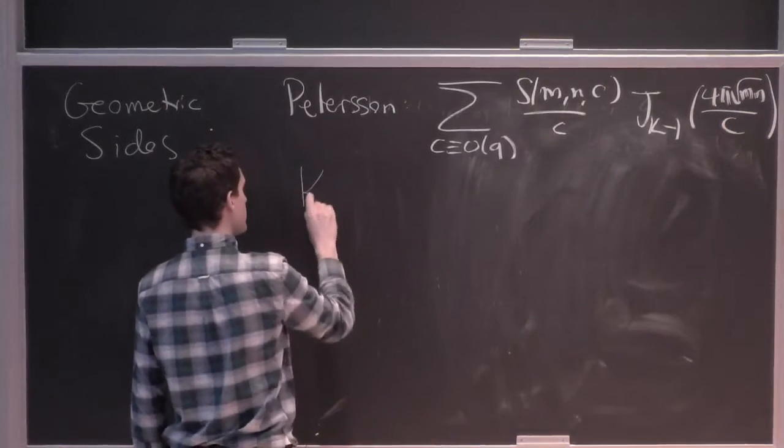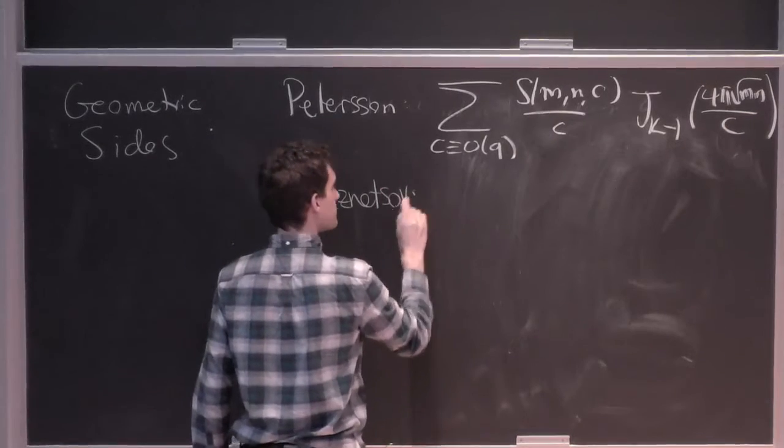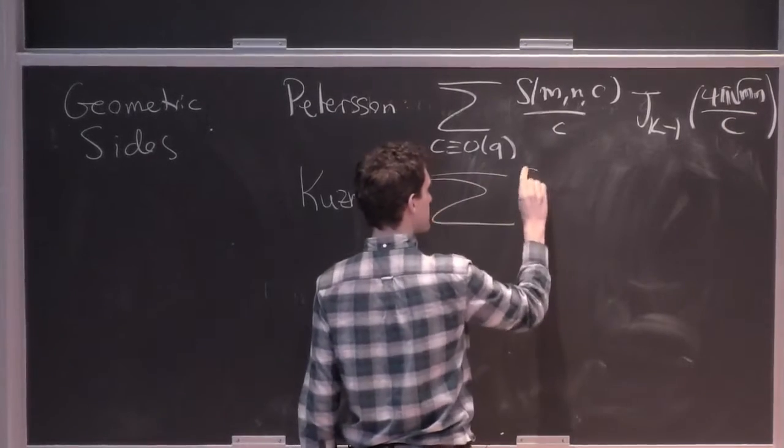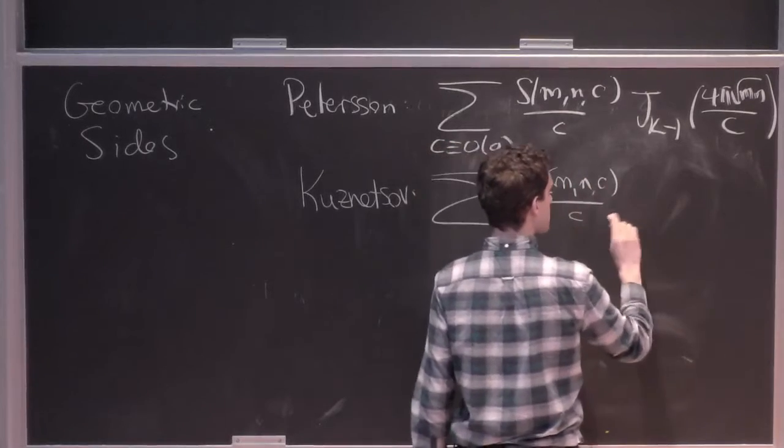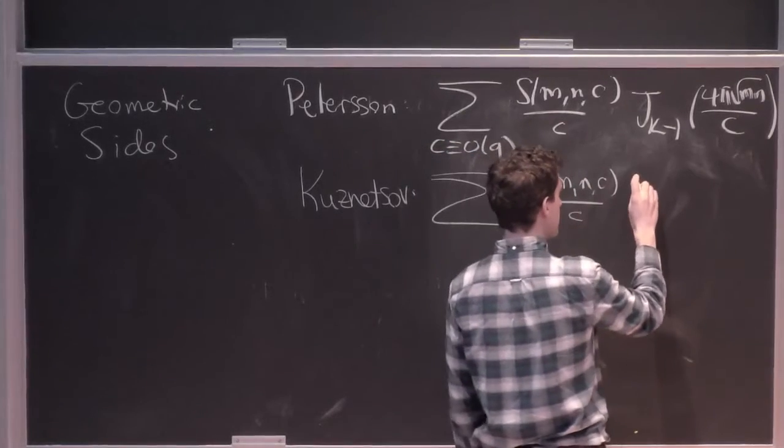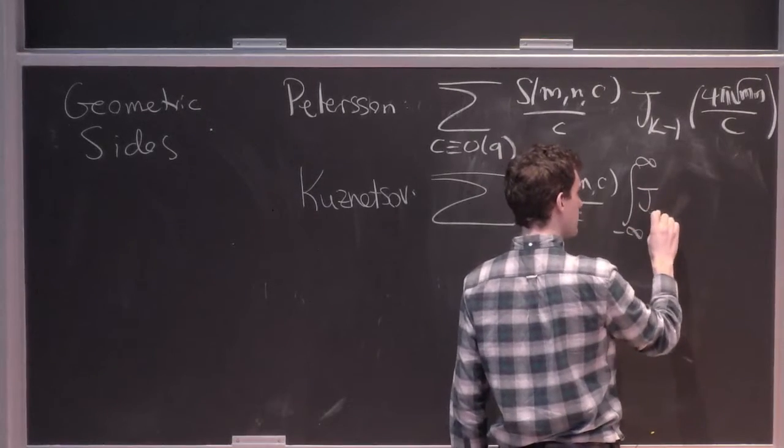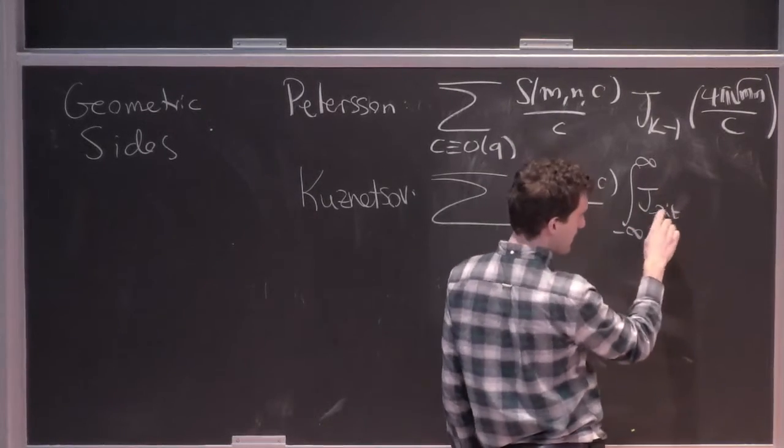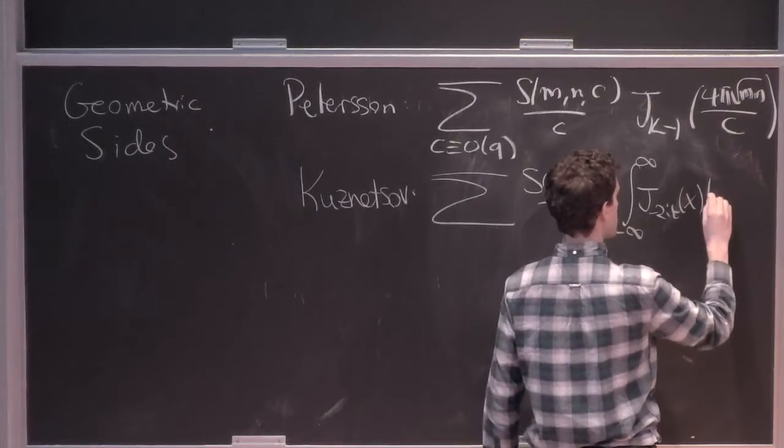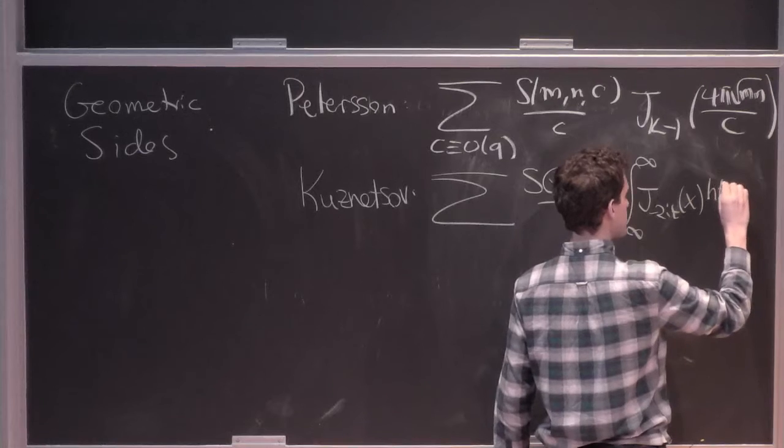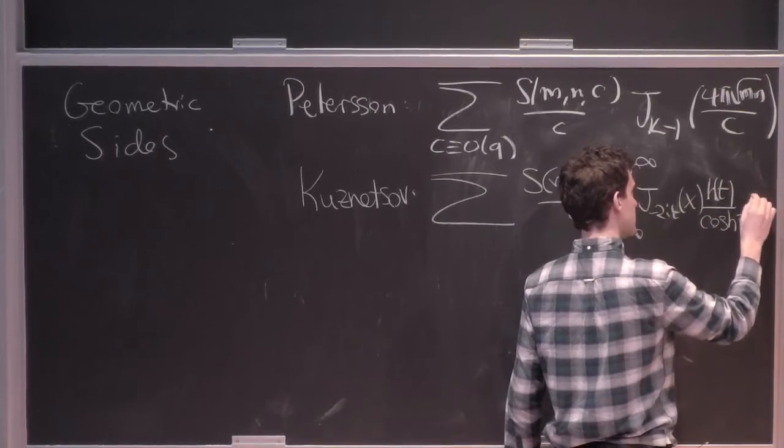And then in the Kuznetsov formula, we had a similar sum of Kloosterman sums, and then with now some integral transform of J Bessel functions, but with a purely imaginary parameter. So here there was some test function h(t) over cosh(πt) dt.